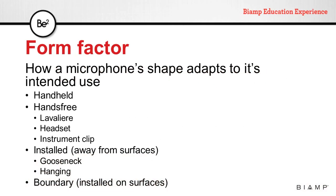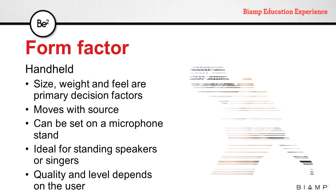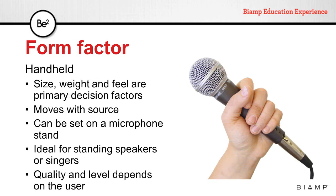A microphone's form factor is how a microphone's shape adapts to its intended use. We can divide microphones into four large groups: handheld; hands-free, which includes lavalier, headset, and instrument clips; installed away from surfaces, like gooseneck and hanging microphones; and boundary microphones, which are installed on surfaces.